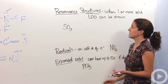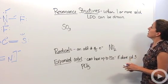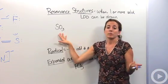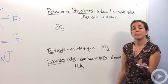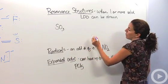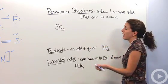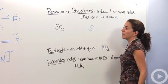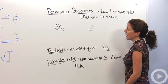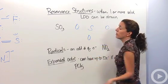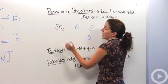There are things called resonant structures. And resonant structures are when one or more valid LDD can be drawn. So let's look at this and show you what I'm talking about. We're going to do it the same exact way we did the other ones. We're going to put our most electronegative atom on the outside and our least electronegative atom on the inside. So sulfur is our least electronegative atom, and so it's going to be our central atom. And the oxygen is going to be surrounding it. Okay. Fair enough.